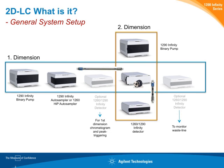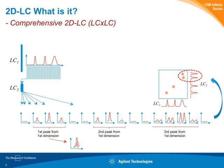There are mainly two techniques. Comprehensive 2DLC is characterized by the fact that all the effluent from the first dimension is sampled onto the second dimension — you cut the first dimension chromatogram into several slices. The second dimension is characterized by short runtimes, and can use gradients or isocratic runs. The picture you finally get is a three-dimensional plot with the first dimension on the X-axis and the second dimension on the Y-axis.